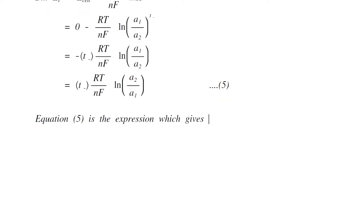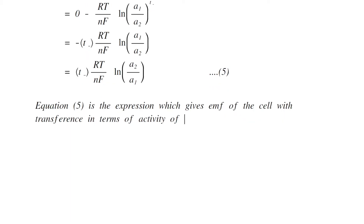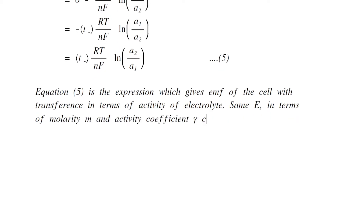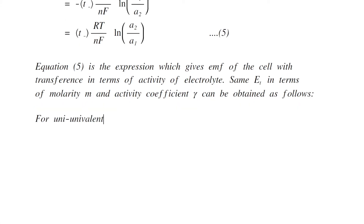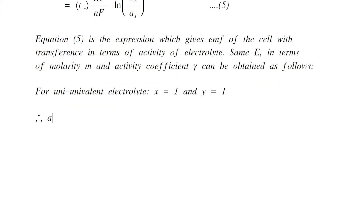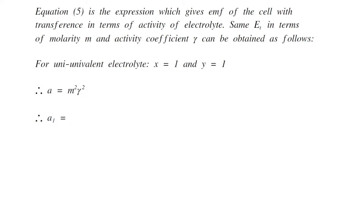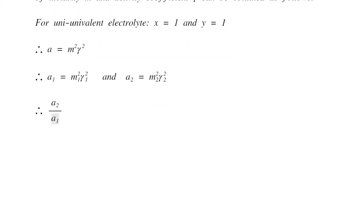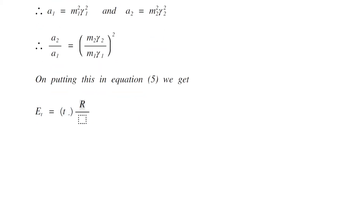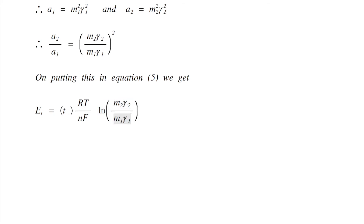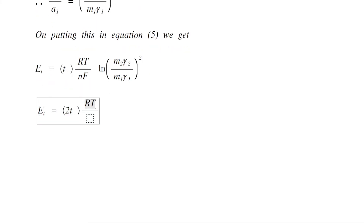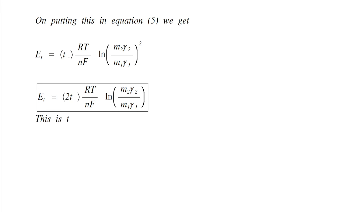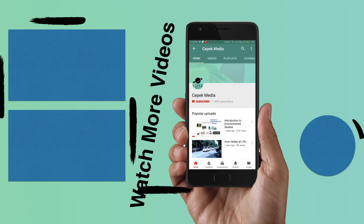Equation 5 gives the EMF of the cell with transference in terms of the activity of the electrolyte. ET can also be expressed in terms of molality M and activity coefficient γ. For a uni-univalent electrolyte, x = 1 and y = 1, so activity A = M² γ². Therefore a1 = M1² γ1² and a2 = M2² γ2². Substituting into equation 5: ET = T- × (RT/nF) ln[(M2 γ2)/(M1 γ1)]². The final expression is ET = 2T- × (RT/nF) × ln(M2 γ2 / M1 γ1).